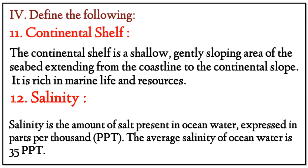Question 11 — Define: Continental Shelf. The continental shelf is a shallow, gently sloping area of the sea bed extending from the coastline to the continental slope. It is rich in marine life and resources. Question 12 — Salinity: Salinity is the amount of salt present in ocean water, expressed in parts per thousand (ppt). The average salinity of ocean water is 35 ppt.